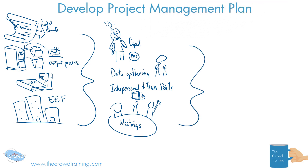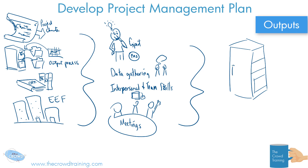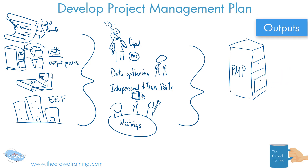The obvious output — since the whole process is about developing a project management plan — is the project management plan itself. You can think of it as a full filing cabinet with all the different plans in it, or just one master plan. Whether drawn as a big binder with all the different plans rolled into one, that is what we consider the output of the Develop Project Management Plan process.